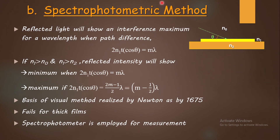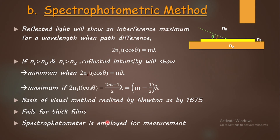To overcome this limitation, a spectrophotometer is employed to measure transmitted or reflected intensity as a function of wavelength, and thus record positions of the maxima and minima. This is why the method is called the spectrophotometric method. Using this device, minima and maxima can be clearly observed even for thicker films, and by substituting the order m and wavelength into the formula, the film thickness can be determined.